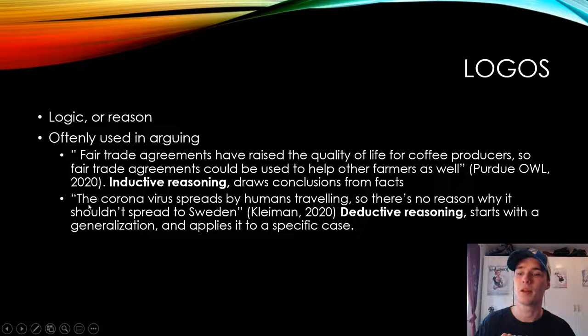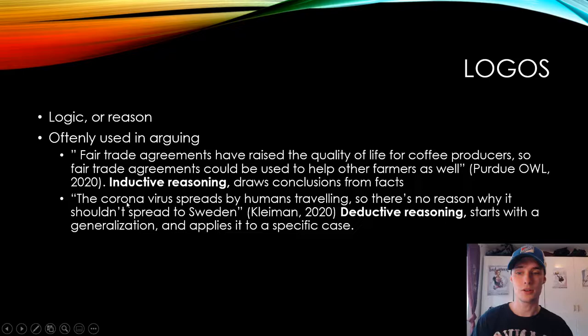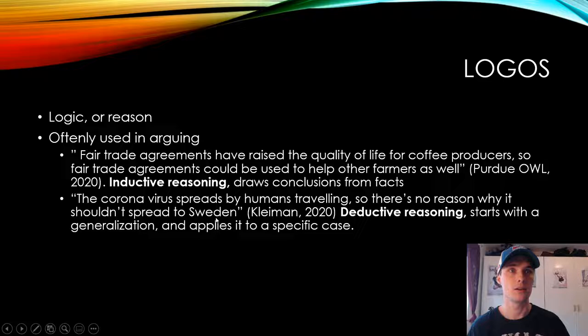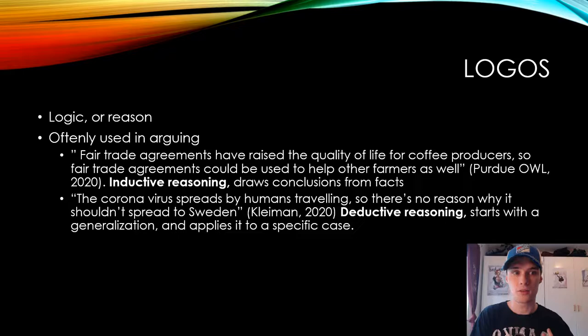Then we have the second example: 'The coronavirus spreads by humans traveling, so there's no reason why it shouldn't spread to Sweden.' This one I made up, and it's deductive reasoning — you start with a generalization, the coronavirus spreads by humans traveling, and then apply it to a specific case: there's no reason why it shouldn't spread to Sweden. So: generalization applied to a specific case. That's deductive reasoning — if A happens, then B should be possible.